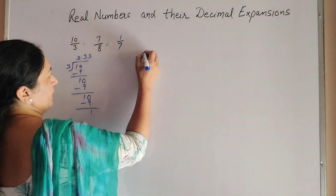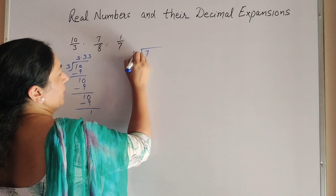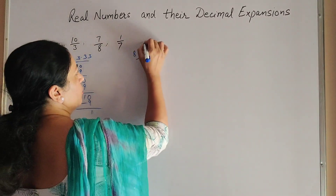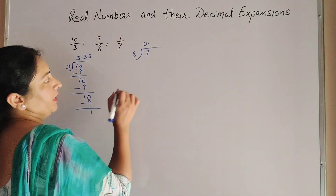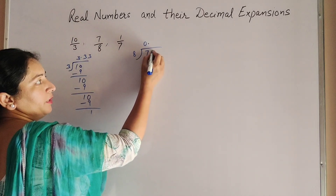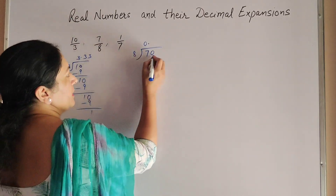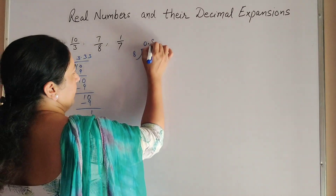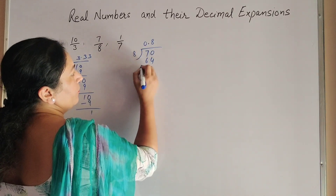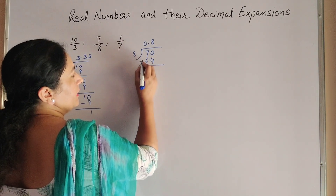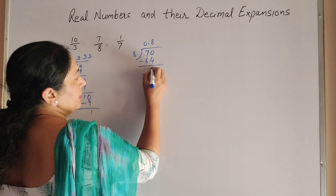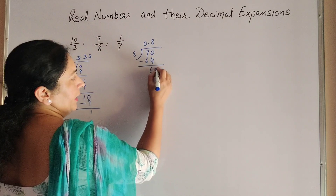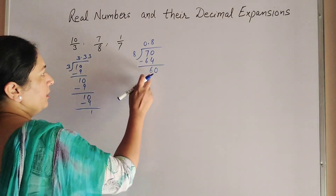The second number is 7/8, meaning 7 divided by 8. Again we use long division. Since 7 is less than 8, we put a decimal point — 0 point. When we put the decimal we add 0. Now 70 divided by 8: 8 eights are 64. 70 minus 64 gives 6.